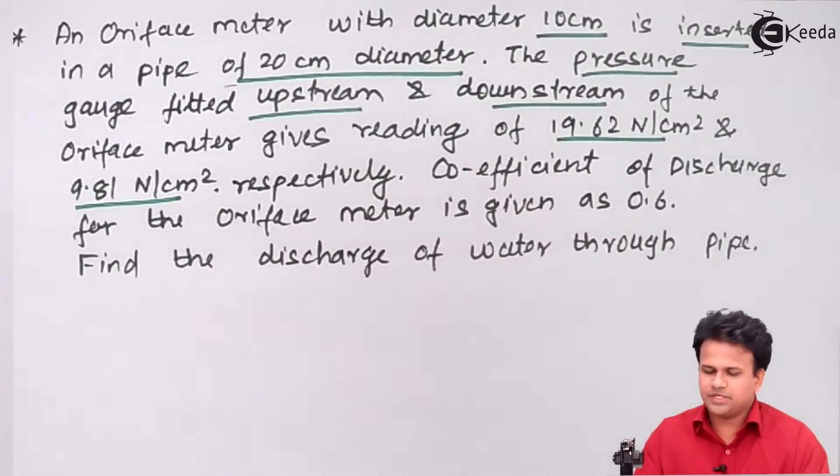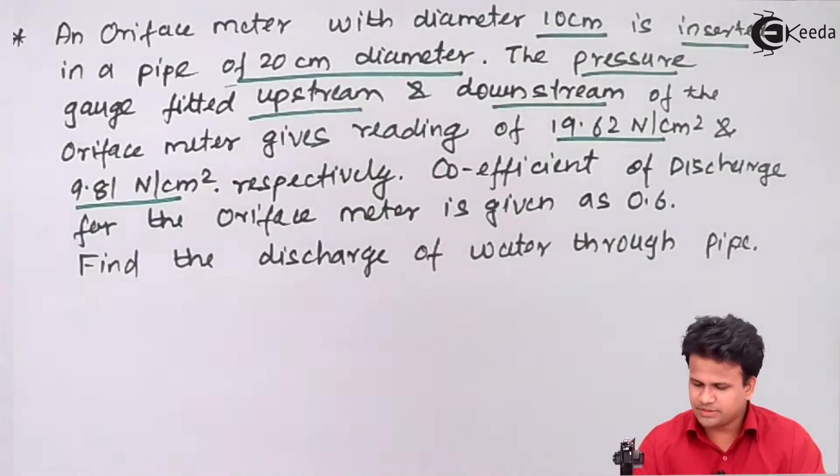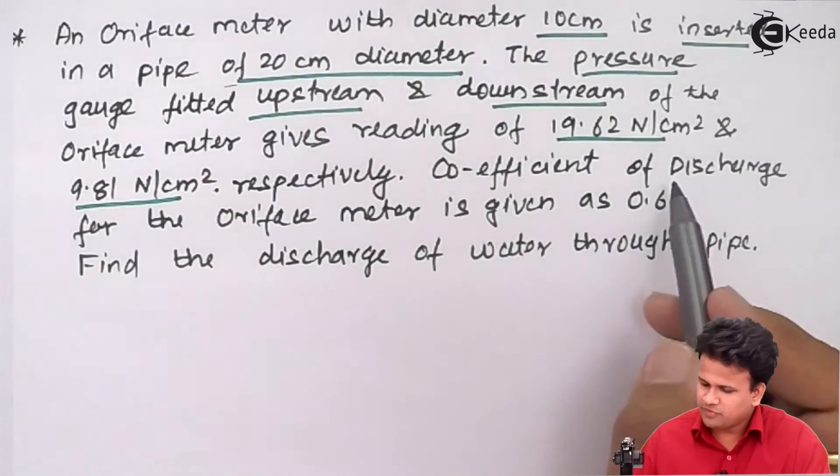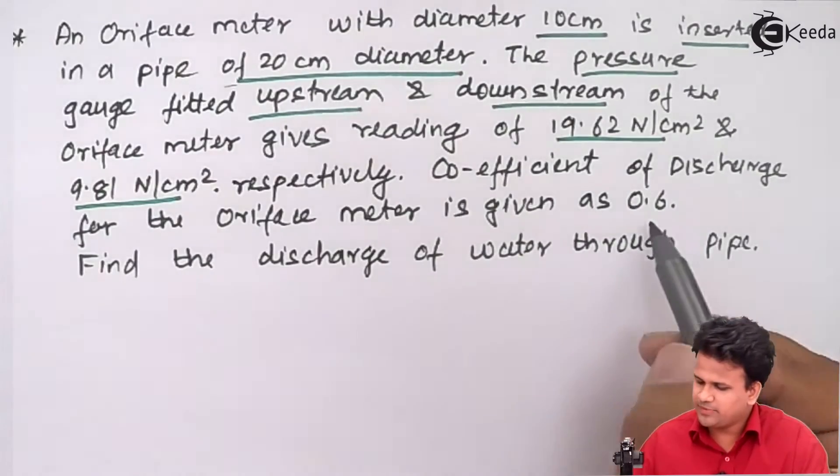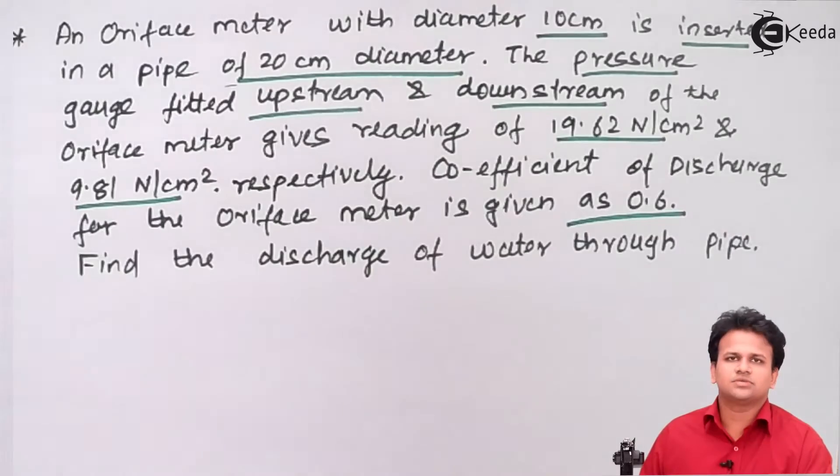So we have the upstream pressure and downstream pressure respectively. We have to calculate the discharge through the pipe if the coefficient of discharge is 0.6.